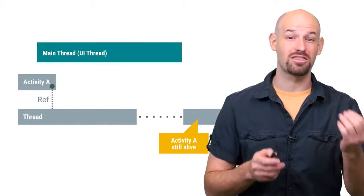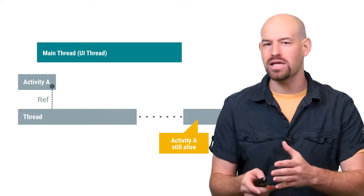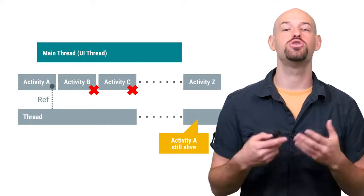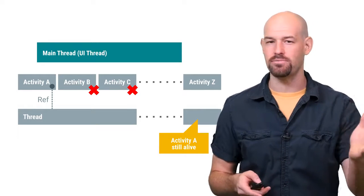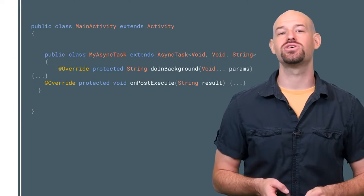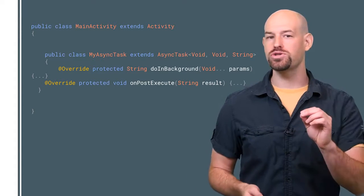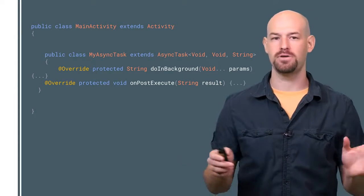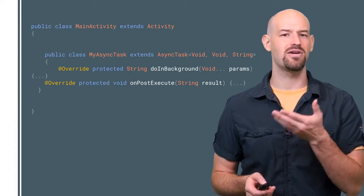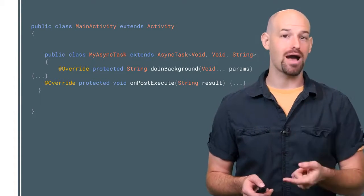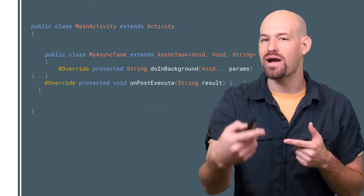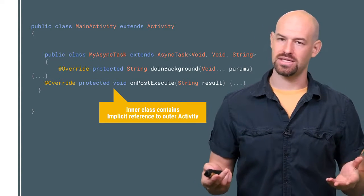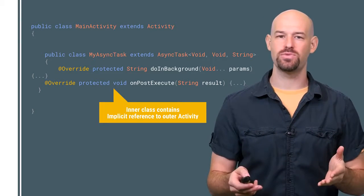If an activity is destroyed but there still exists a threaded block of work that references it, the activity won't get collected until that work finishes. So if you kick off some work and the user rotates the screen three times in a row before that work completes, you could end up with three instances of that activity object resident in memory. It's not just explicit references to UI objects you need to worry about — you also have to be cautious of implicit references. A threading object declared as an inner class of an activity will have an implicit reference to the enclosing activity and will keep that reference until the work object has been destroyed. The result is the same: until this work completes, the activity stays around in memory.